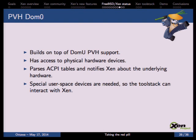PVH DOM0 builds on top of PVH DOMU and is very similar, with the main difference that in DOM0 we have access to physical hardware. FreeBSD has to parse the ACPI tables and notify Xen about the devices it finds — Xen has no ACPI parser because it is very large and intrusive. The guest is responsible for parsing ACPI tables and notifying Xen. We also had to add a couple of user-space devices to interact with Xen, so the tool stack can create guests and manage the hypervisor.